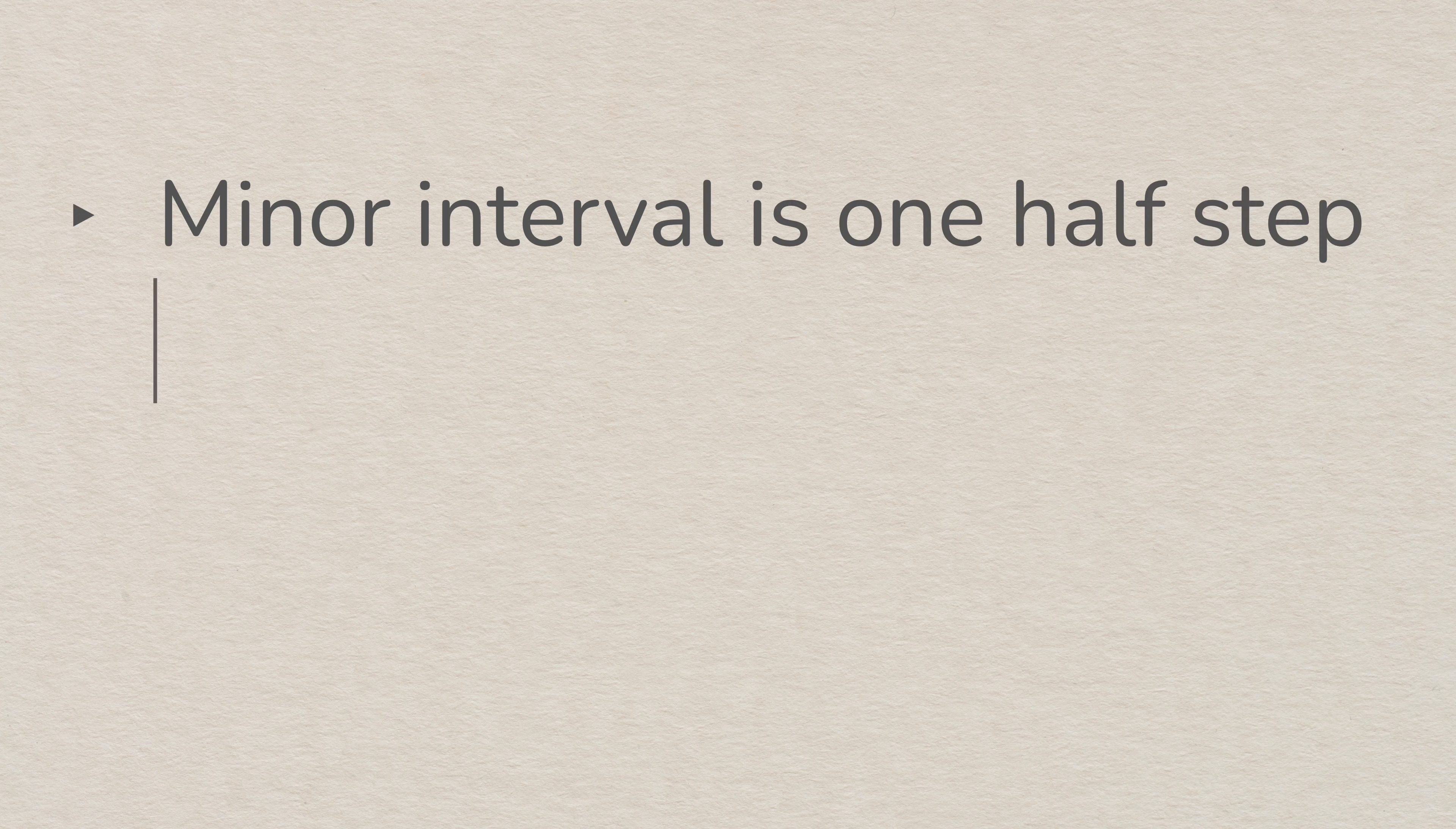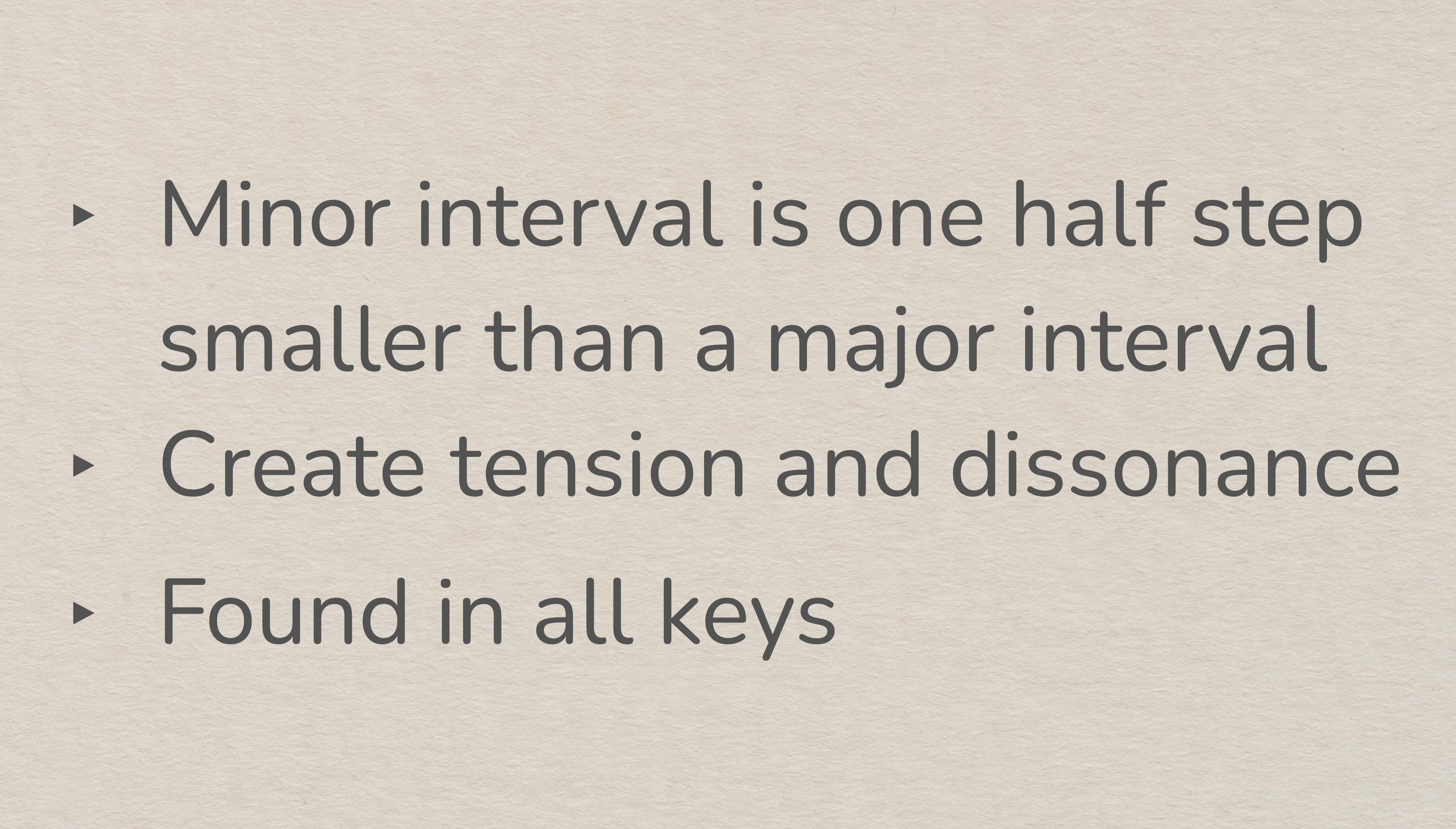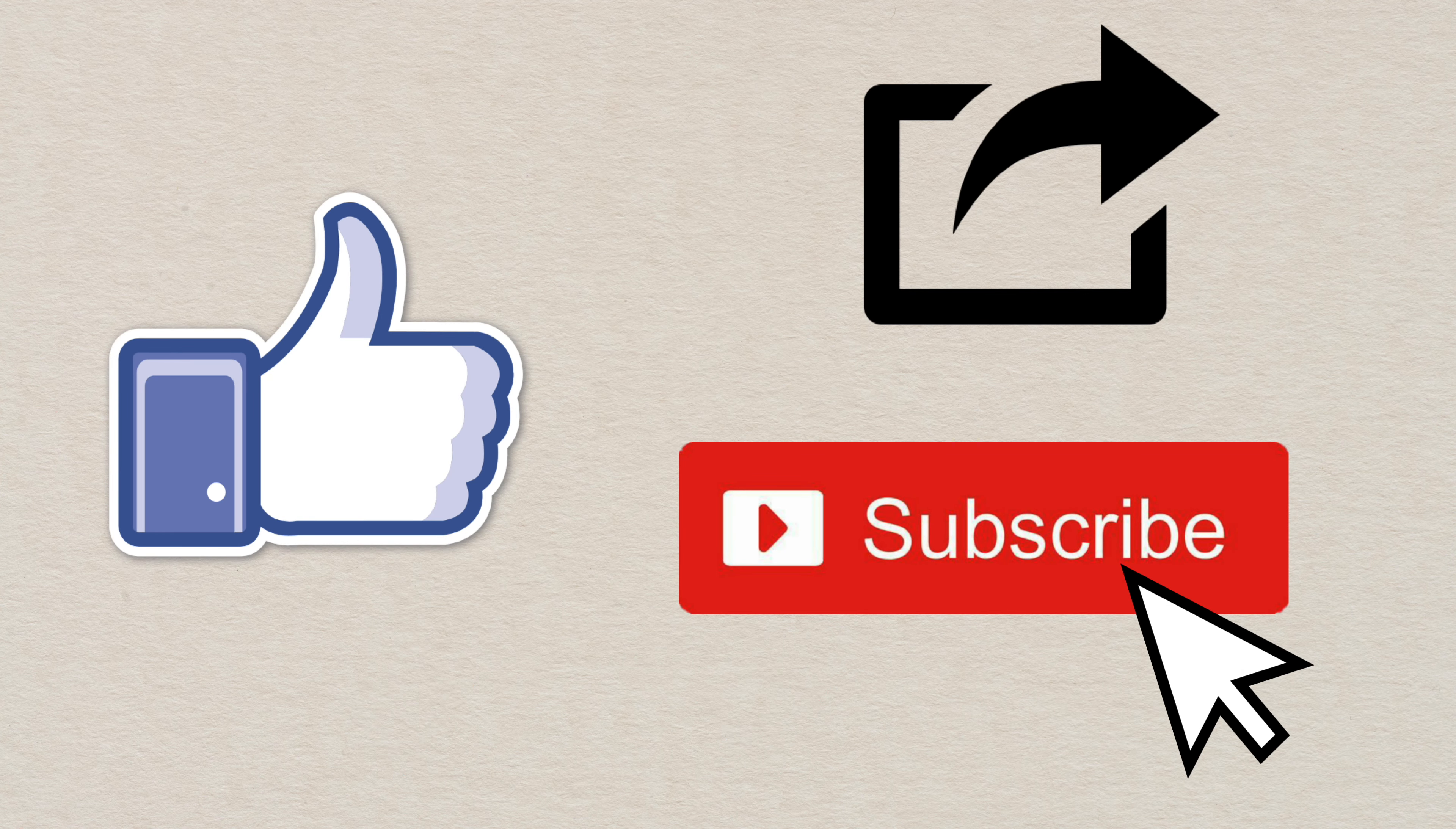In conclusion, minor intervals refer to the distance between two notes that is one semitone smaller than a major interval. They are often used to create tension and dissonance in music and can be found in all keys. Thank you for watching and I hope this video gave you a better understanding of minor intervals in music. If you need extra practice, check the links in the description below to find worksheets. If you liked this video, don't forget to like, share and subscribe. See you next time!